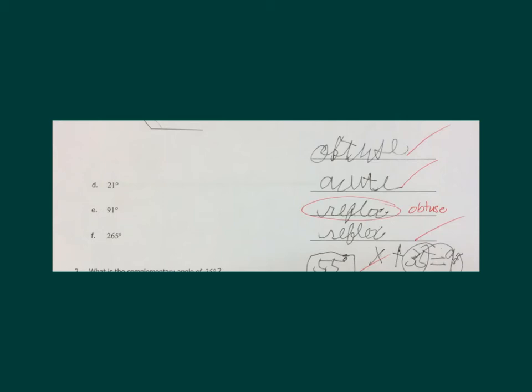I think you are confused with classifying angles. You were able to get the first one — this is number 21 — because it's smaller than 90 degrees, right? So that's an acute angle, that's correct.